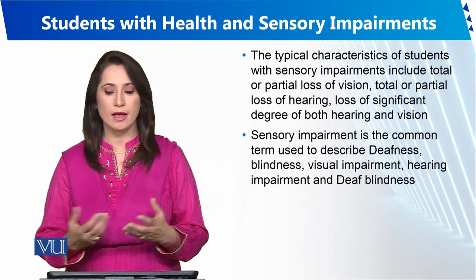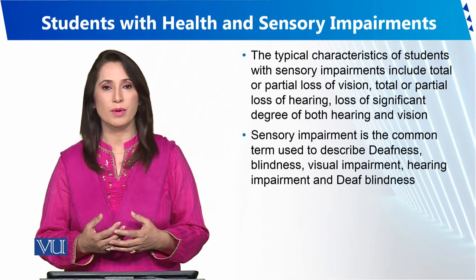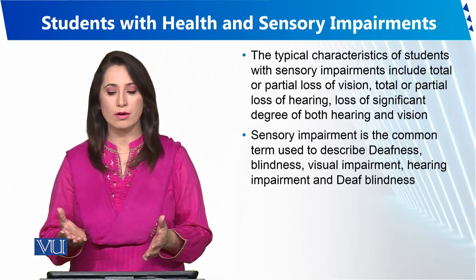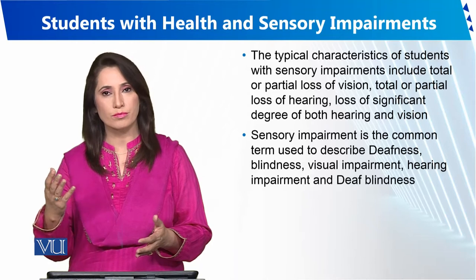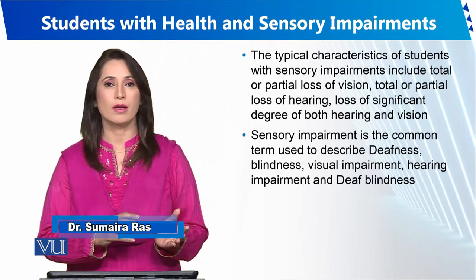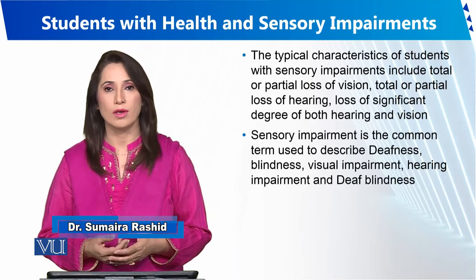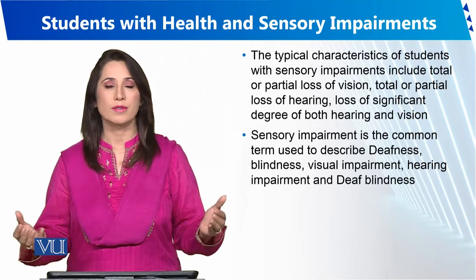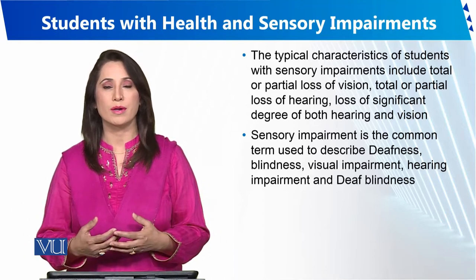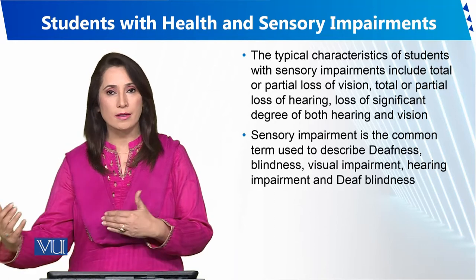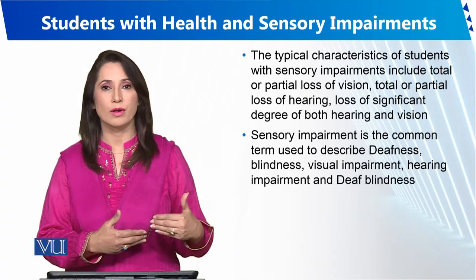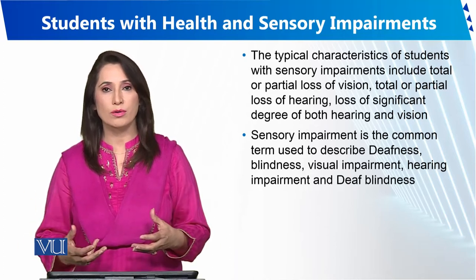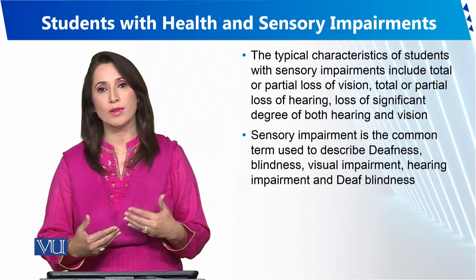The characteristics of students with these impairments fall in the categories of partial loss of hearing or seeing, or a significant degree of impairment in hearing and seeing. Whatever the level or degree of the problem is, students have to face these impairments. Like other impairments, these have degrees or levels or extent that both the student and the teacher must know about, so that we can handle a student with these impairments.